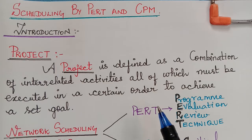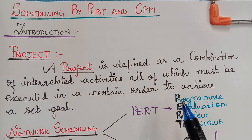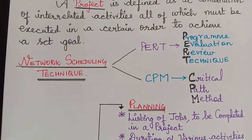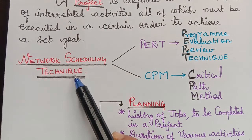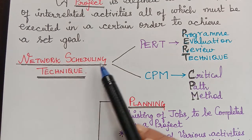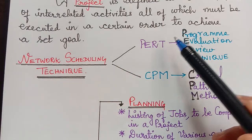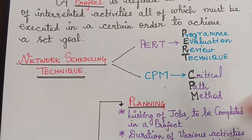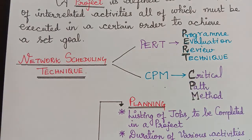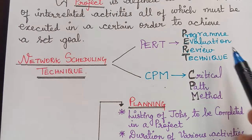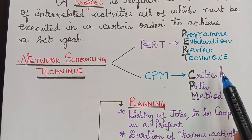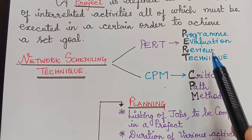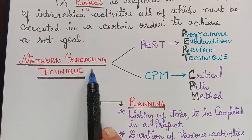These projects can be solved by using a technique known as network analysis. This network scheduling technique has various methods of calculating the scheduling problem. Here we are going to learn the two prominent methods: PERT, which stands for Program Evaluation Review Technique, and CPM, which stands for Critical Path Method. These two methods are used to solve a network scheduling problem.